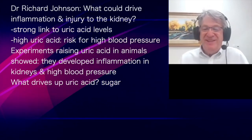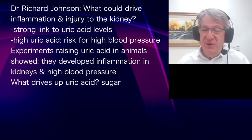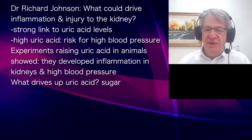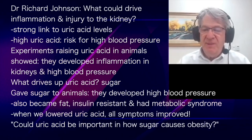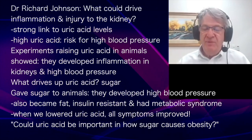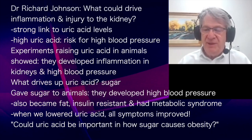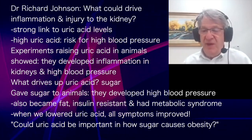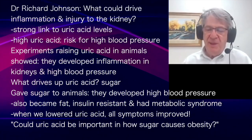The question was: what drives up the uric acid? One of the things that can do it is sugar, and sugar intake had been increasing during the last century in parallel with an increase in uric acid and a rise in blood pressure. We started giving sugar to animals and they developed high blood pressure. When we gave sugar to animals, they also became fat, became insulin resistant, and developed all the features we call metabolic syndrome.